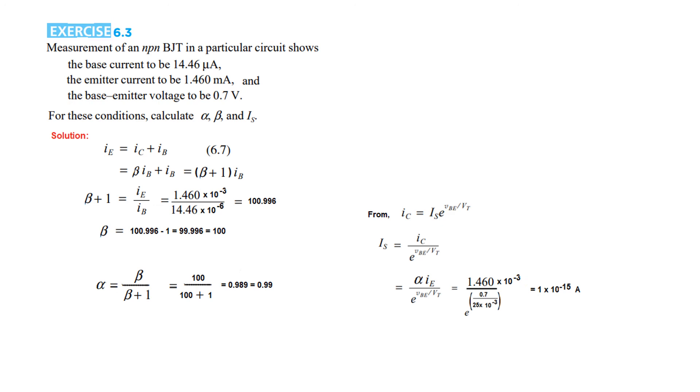IE = 1.46 × 10^-3, the emitter current. Multiplied by alpha is almost one—we calculated alpha = 0.99. And e^(VBE/VT): VBE = 0.7 and VT = 25 millivolt. So we get the answer of 1 × 10^-15 ampere for IS.